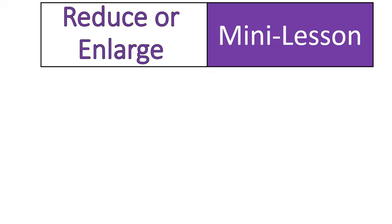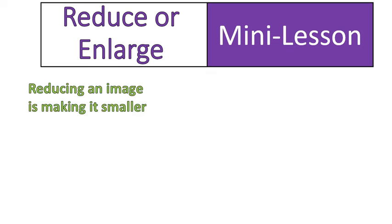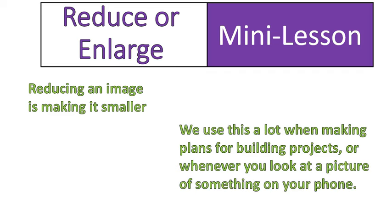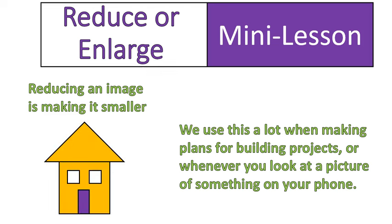We can take an image and reduce it, or we can enlarge it. Reducing an image is making it smaller. We use this when we are making plans for building projects, or if you're looking at something on your phone, like a picture of a house, an airplane, or the sun. These are examples of reducing an image when they keep the same basic look, the same shape, but a different size.